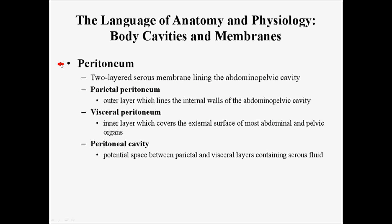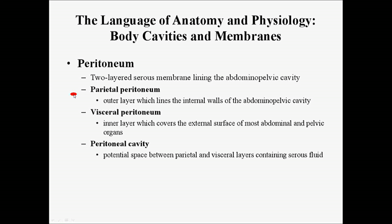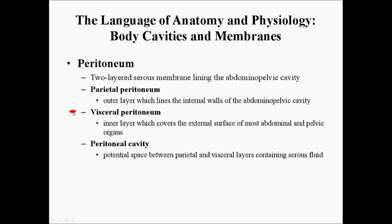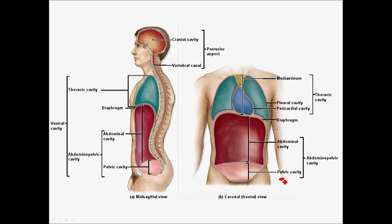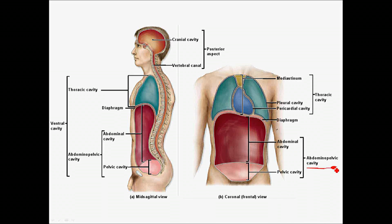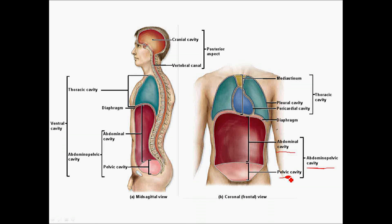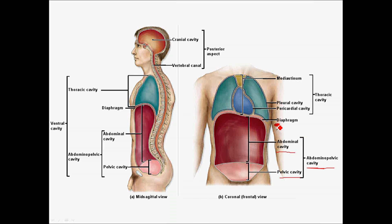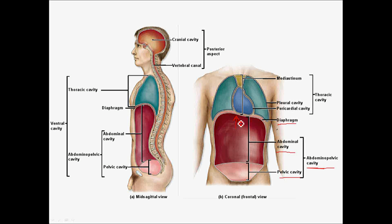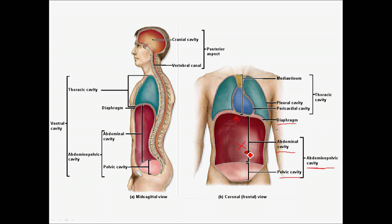The lining of the abdominal pelvic cavity is the peritoneum. It is a two-layered serous membrane, where you have the parietal peritoneum against the walls of the abdominal pelvic cavity, and the visceral peritoneum lining the organs of the abdominal and pelvic cavity. The space contains peritoneal fluid — that serous fluid that reduces friction. This is beneath the diaphragm, and you will have a parietal peritoneum against the abdominal wall, with the organs in the space lined with the visceral peritoneum.